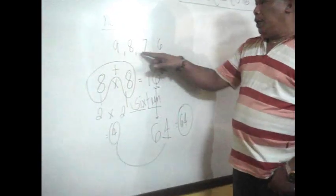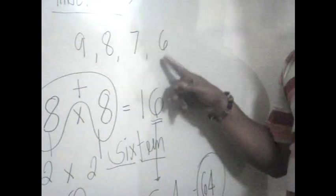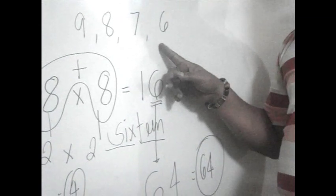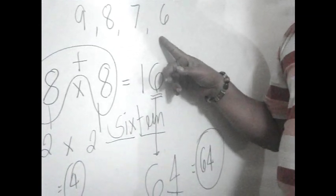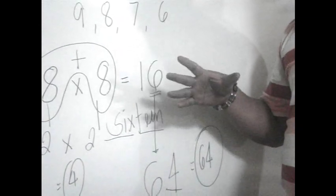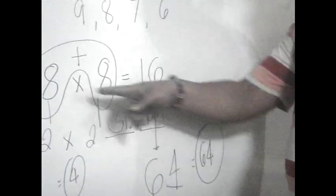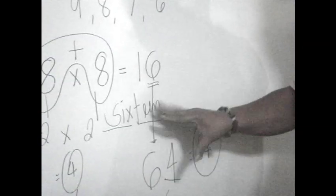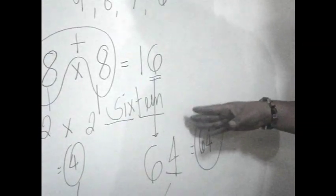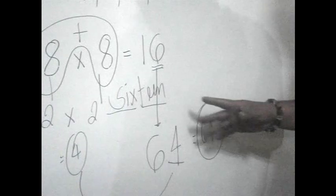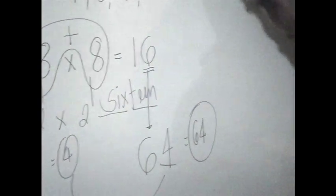I repeat, 9, 8, 7, and 6 is a problem of forgetfulness. So, you can recall, you can remember by just doing it in a simple way, just adding, then apply this procedure. Another example.